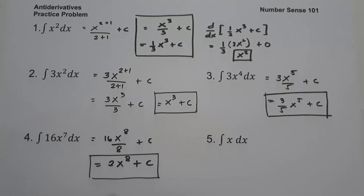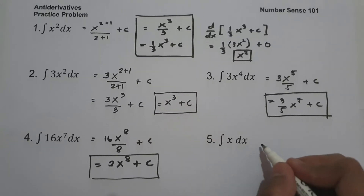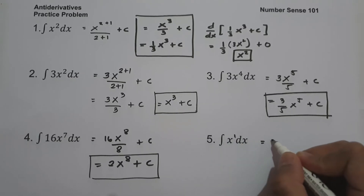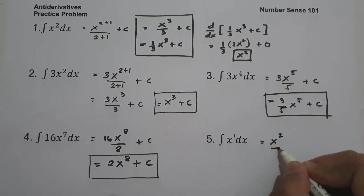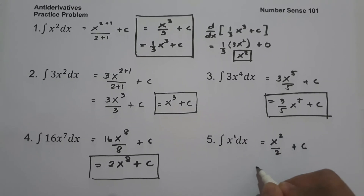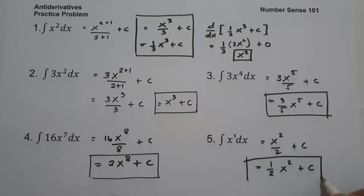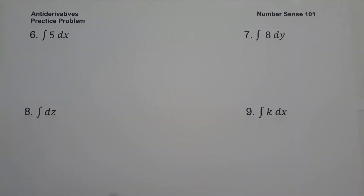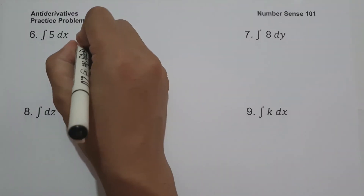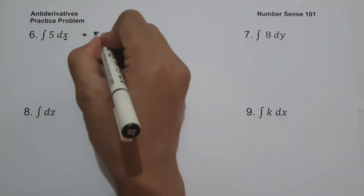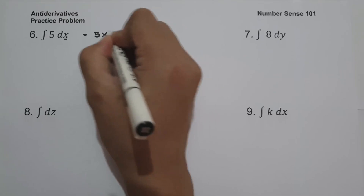On number 5, what is the antiderivative of x dx? Since the exponent of x is 1, it will give us x squared over 2 plus c, or 1 half x squared plus c. On number 6, what is the antiderivative of 5 dx? Whenever you integrate a constant, you need to add a variable to it. So this will be 5x plus c.